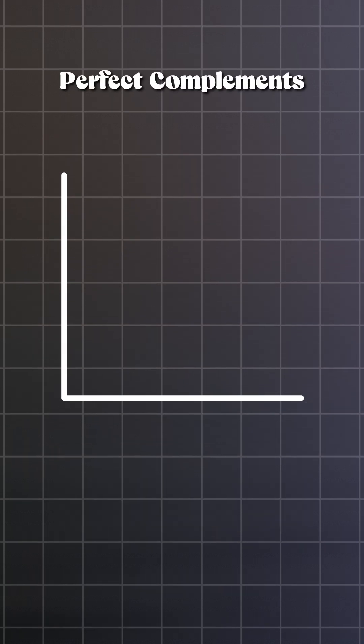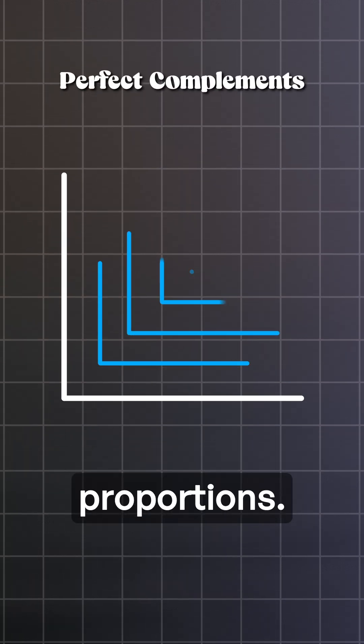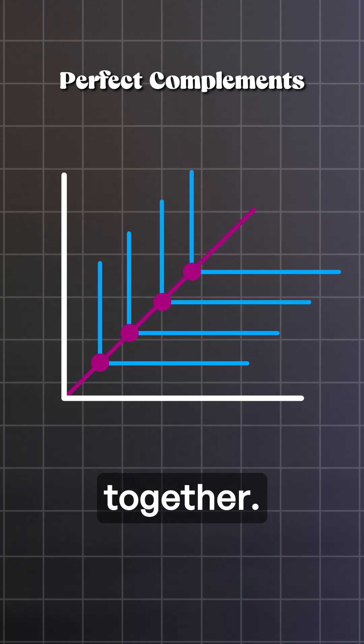Second, perfect complements. Here, both inputs are needed in fixed proportions. You don't get more output unless both increase together.